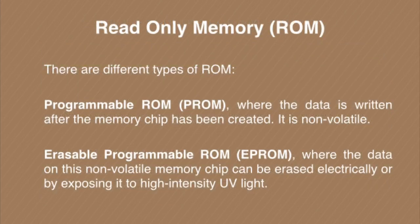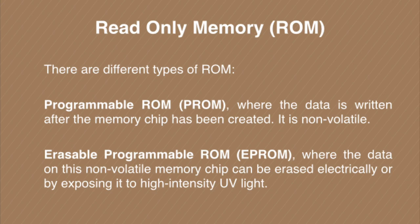Now we will study the different types of ROM. There are two major categories: Programmable ROM and Erasable Programmable ROM. In Programmable ROM, the data is written after the memory chip has been created — the data can be written into the memory cell using some code or program, which is why it is called Programmable ROM. It is non-volatile; we cannot erase the data once it is written.